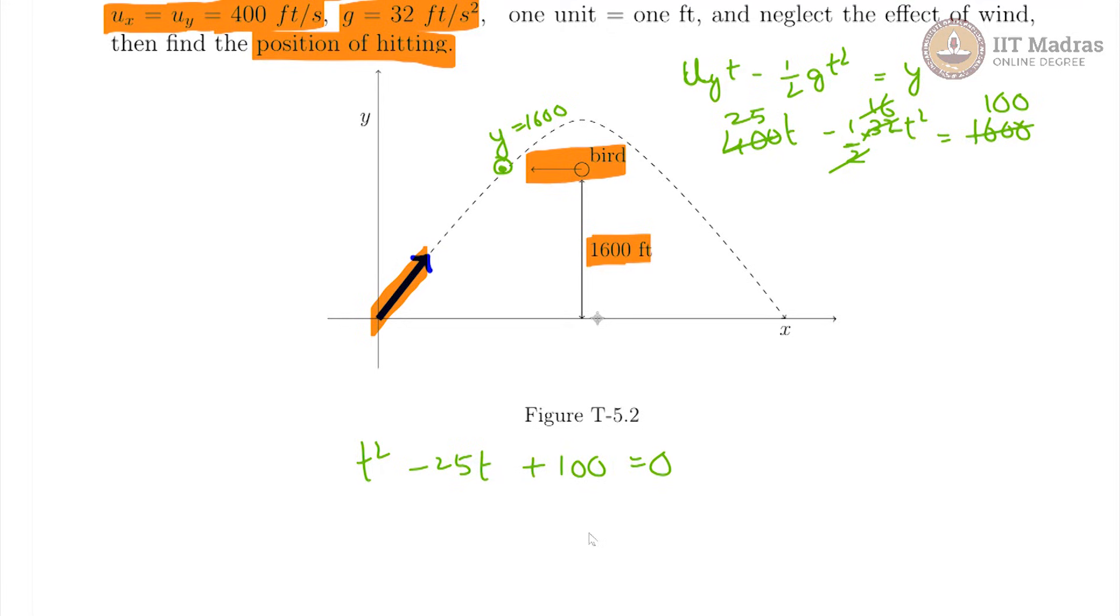And if we solve for the roots of this equation, we get the time when y is 1600. We will get two times because y is 1600 twice on this path. You will get t1 and t2. We are looking for t1 because that is where the bullet will hit the bird.